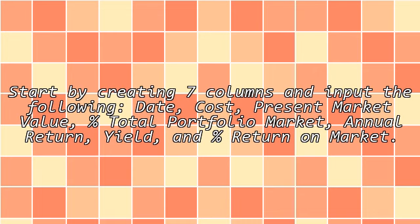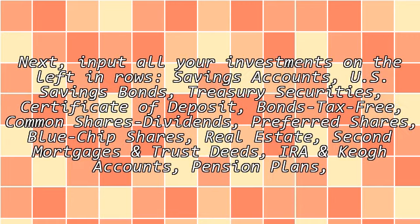The seven columns are: date cost, present market value, percent total portfolio market, annual return yield, and percent return on market. Next, input all your investments on the left in rows.